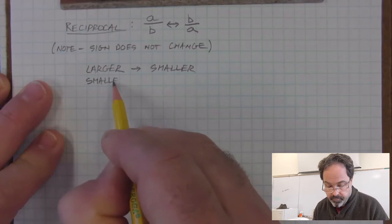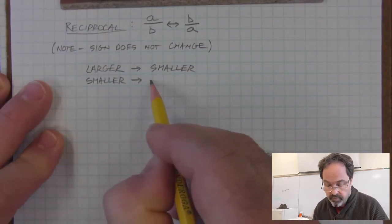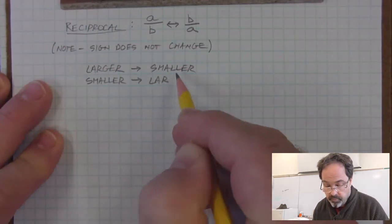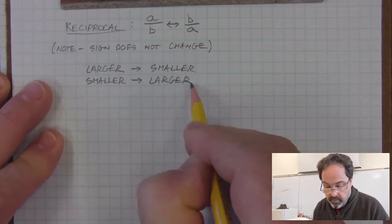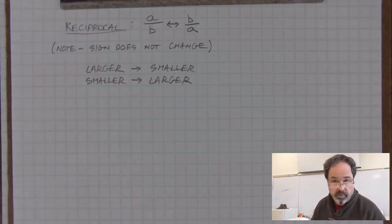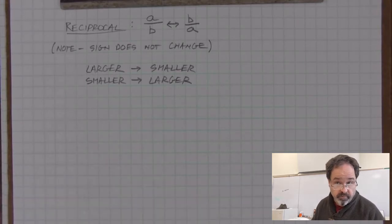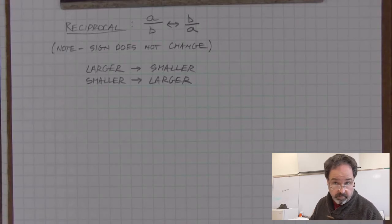And likewise, the smaller the number is, the larger the reciprocal will be. If you have a small number, like one-half, the reciprocal is two. If you have a very small number, like a millionth, then the reciprocal of that is very large.